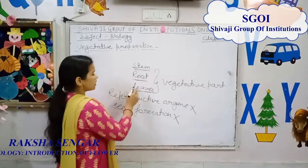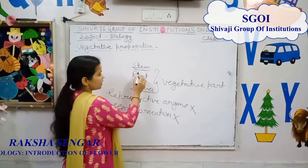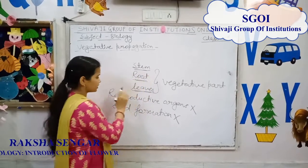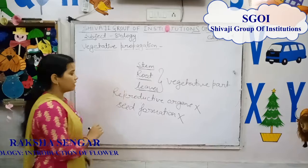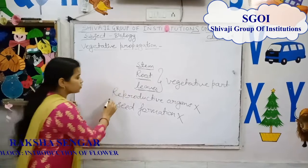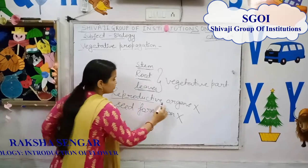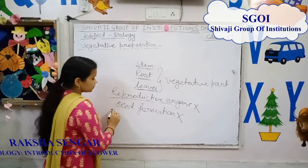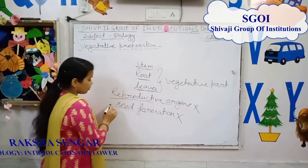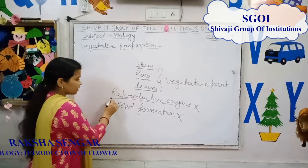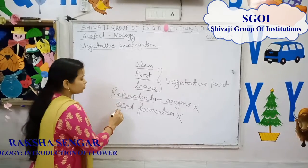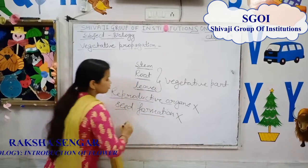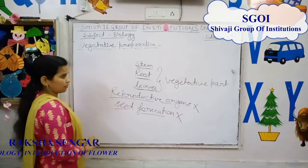A new plant arises by using these parts of a plant, and there is no involvement of reproductive organs or seeds. Because the reproductive parts are not used, seed formation also does not occur.